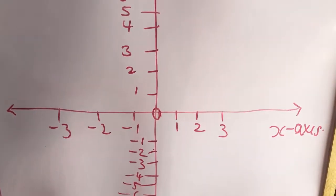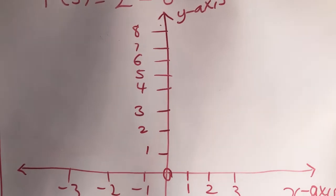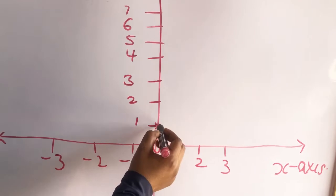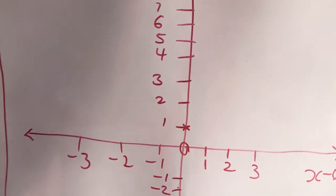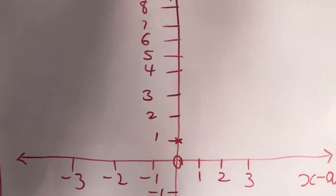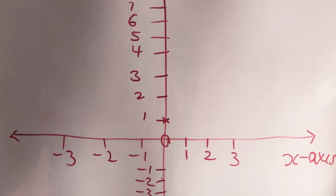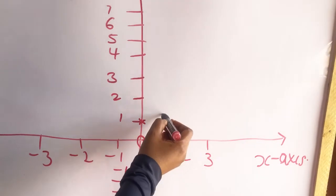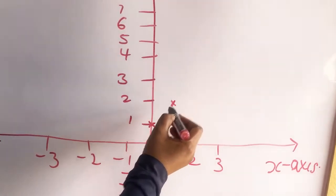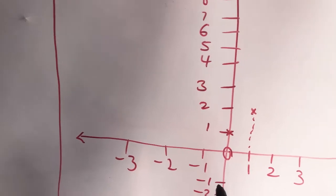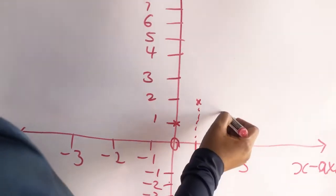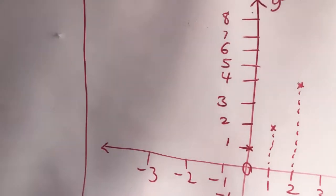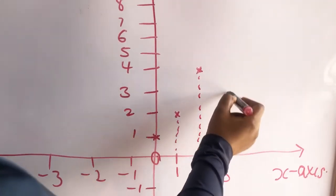When x is equal to 0, y is equal to 1. When x is equal to 1, y is equal to 2 — it will be here. When x is equal to 2, y is equal to 4 — it will be here. When x is equal to 3, y is equal to 8 — it will be up here.